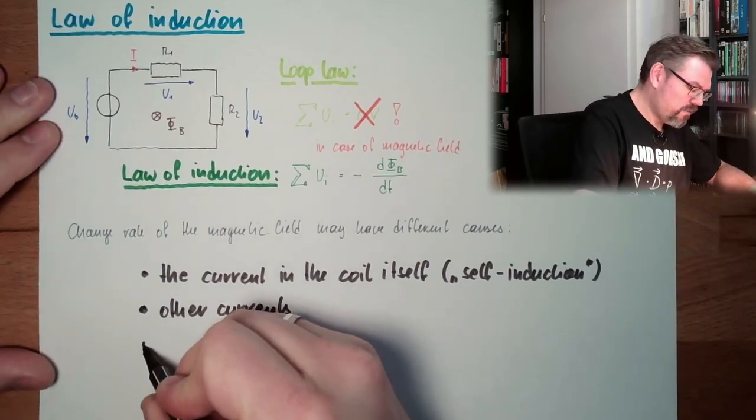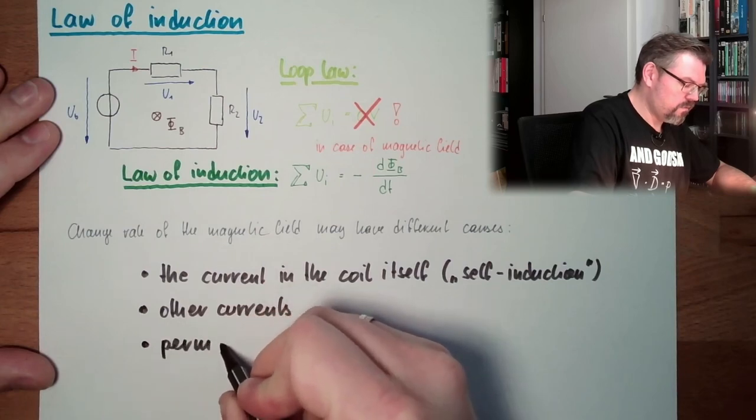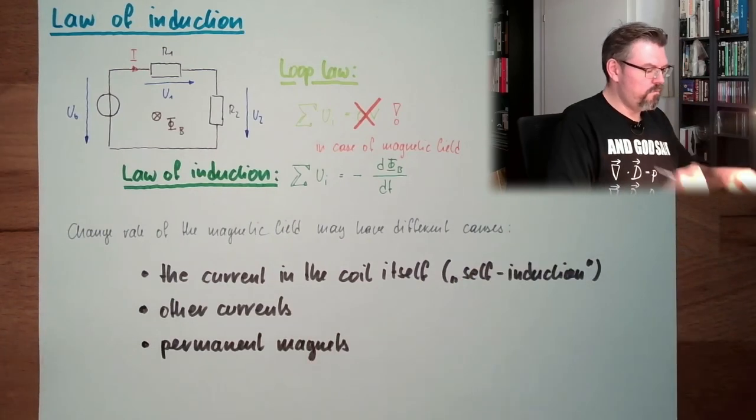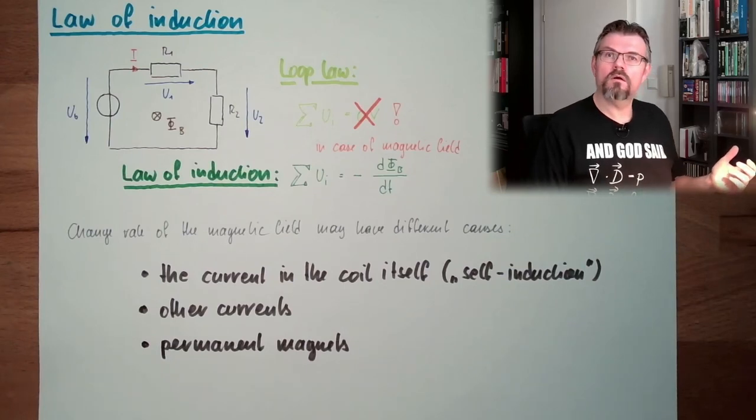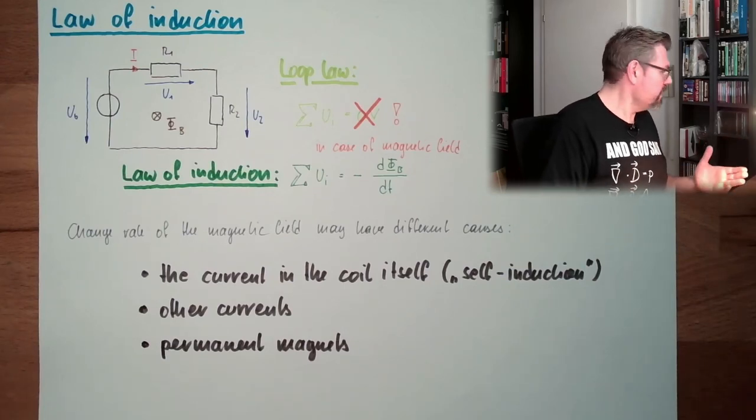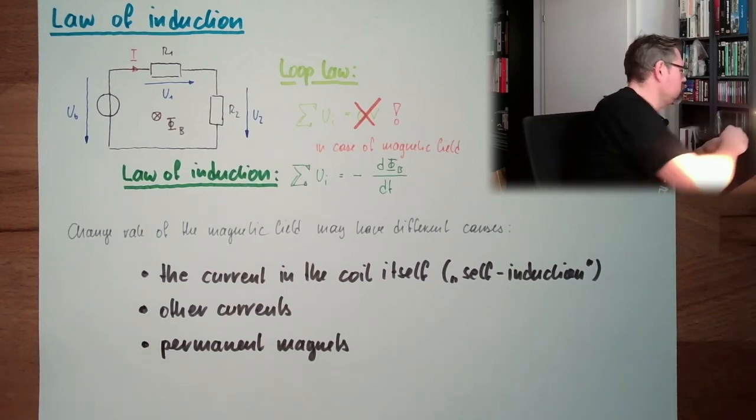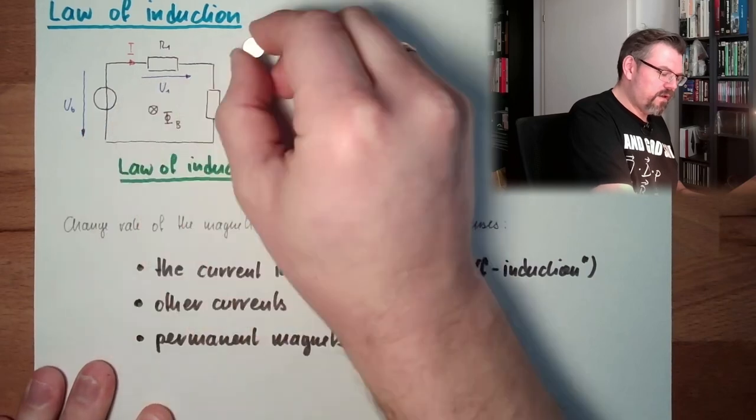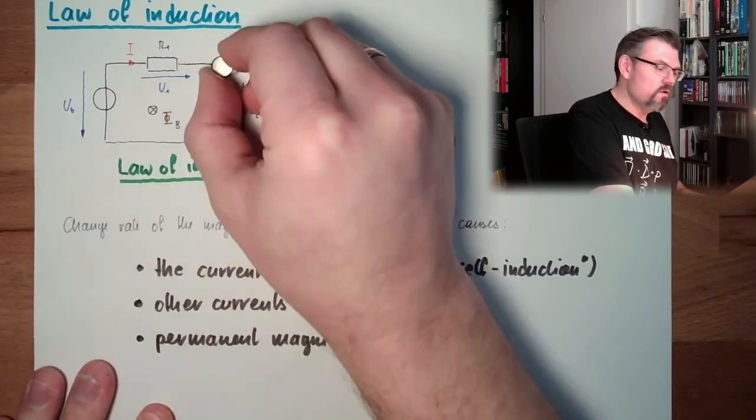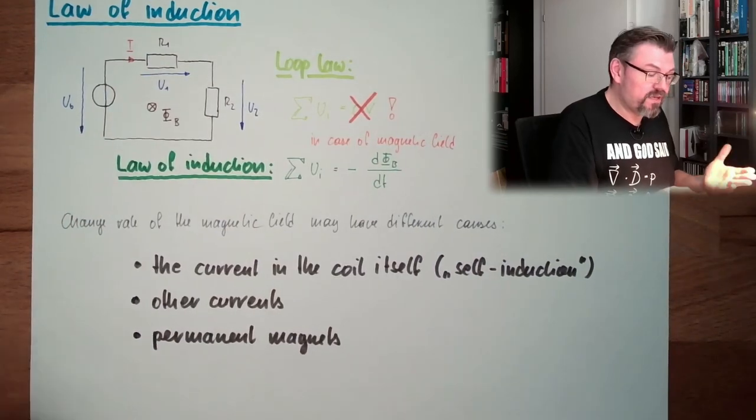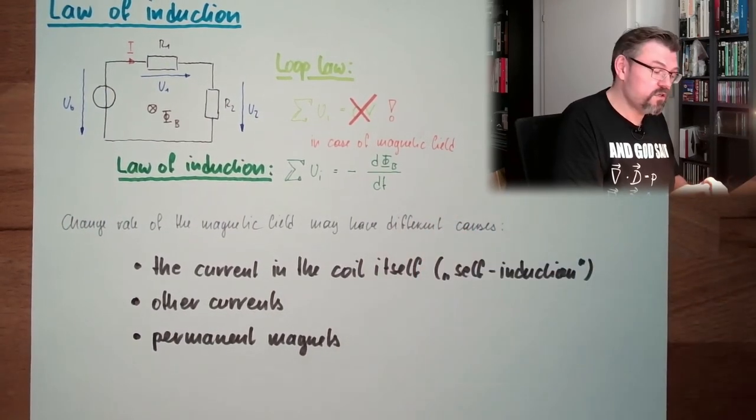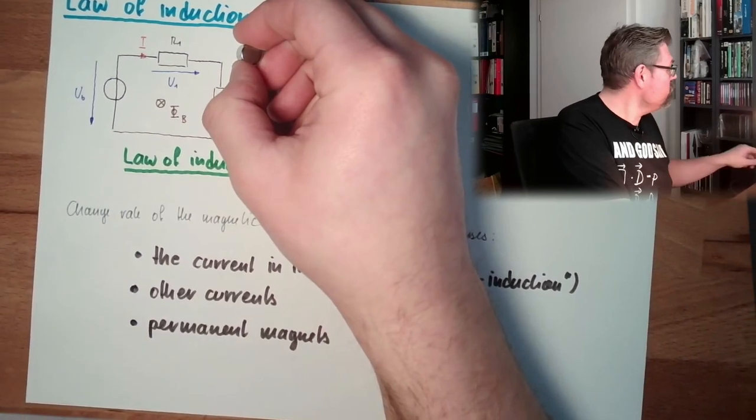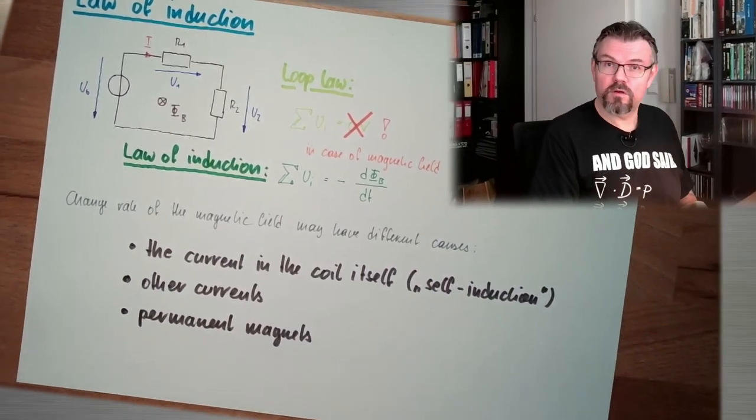And then there might be permanent magnets. If I have a permanent magnet here, and I'm passing this permanent magnet over my loop the whole time, then inside this loop there is a changed magnetic flux, changed magnetic field, because now it's there, now it's not, now it's there, now it's not, and I am introducing here voltage. Some generators work that way.